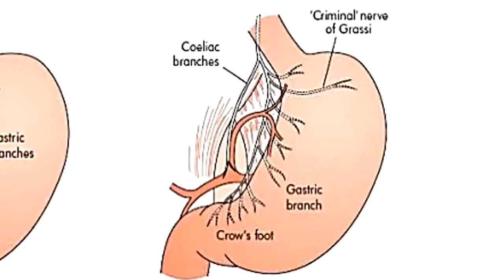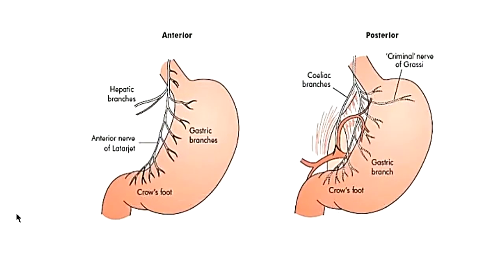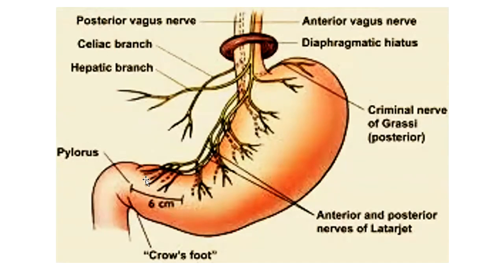The branches of the posterior vagus giving gastric branches are called the posterior nerves of Latarjet. Looking at the combined picture: we see the anterior vagus with its hepatic branch, the nerves of Latarjet, and the crow's foot. We see the posterior vagus with its celiac branches, the criminal nerve of Grassi going initially, then the posterior nerves of Latarjet and the crow's foot.